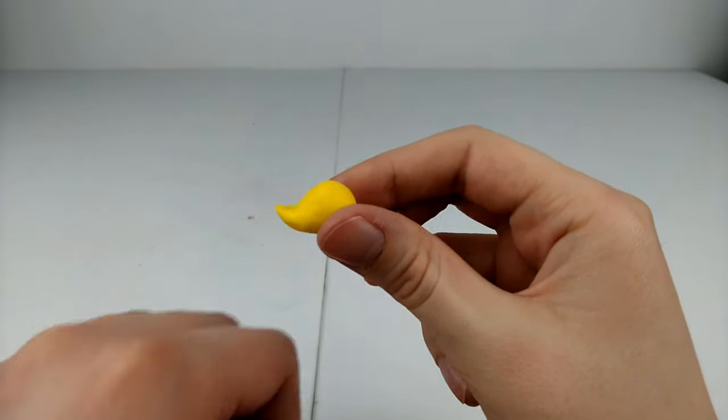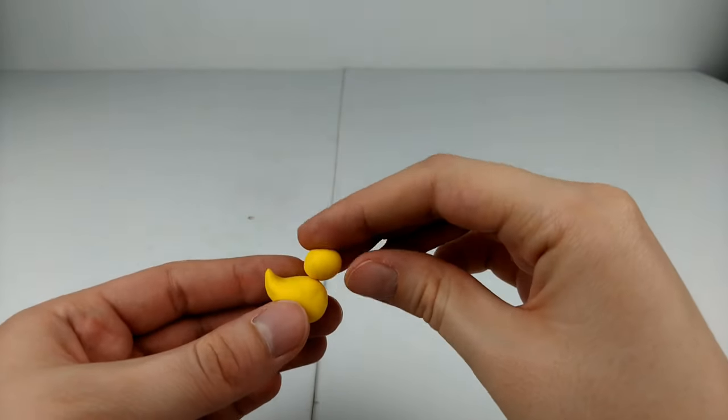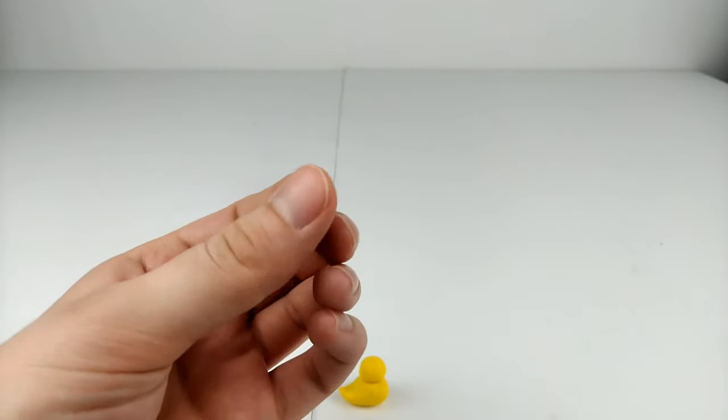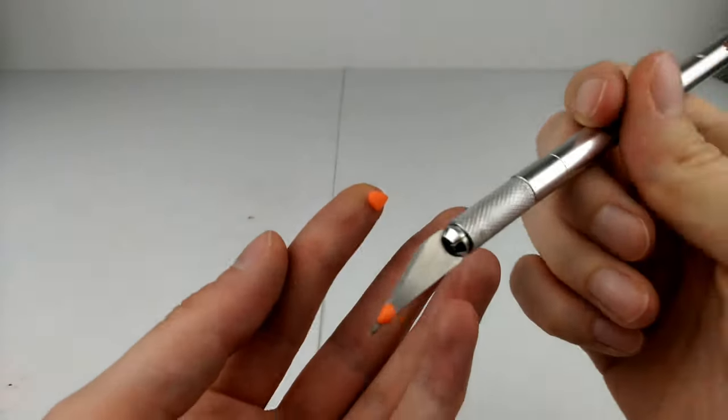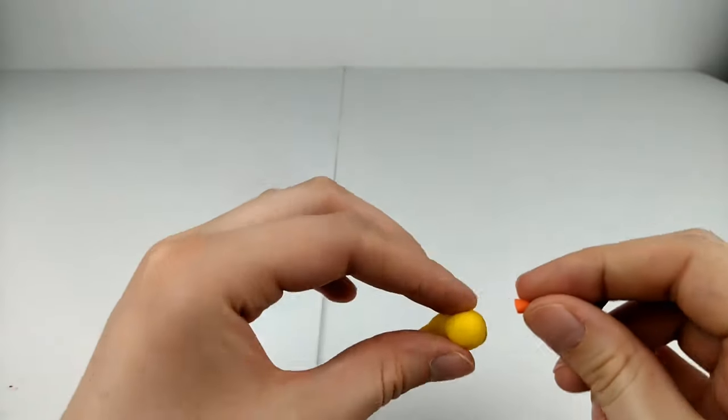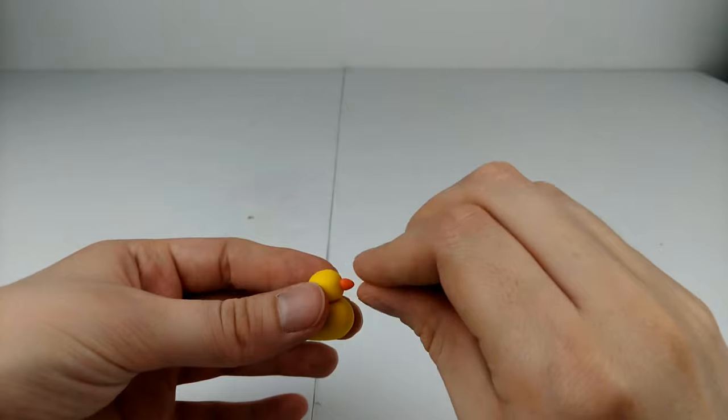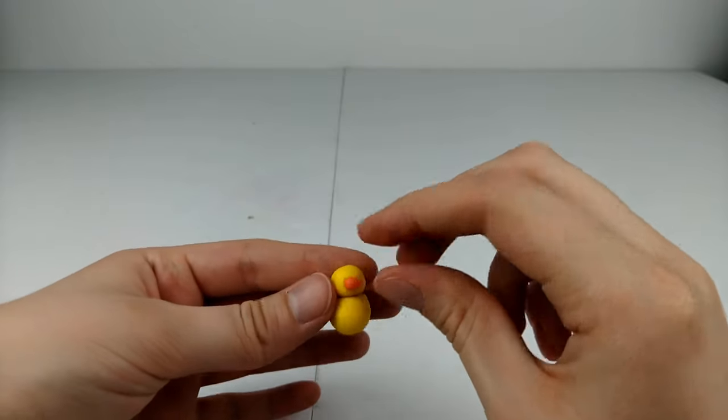Once that's done, take a smaller ball of yellow clay and put that on top as the head. And for our duck's beak, or I guess it's bill, we're going to be taking a small ball of orange clay, rolling that out a bit and cutting off one end and using the other for the bill.